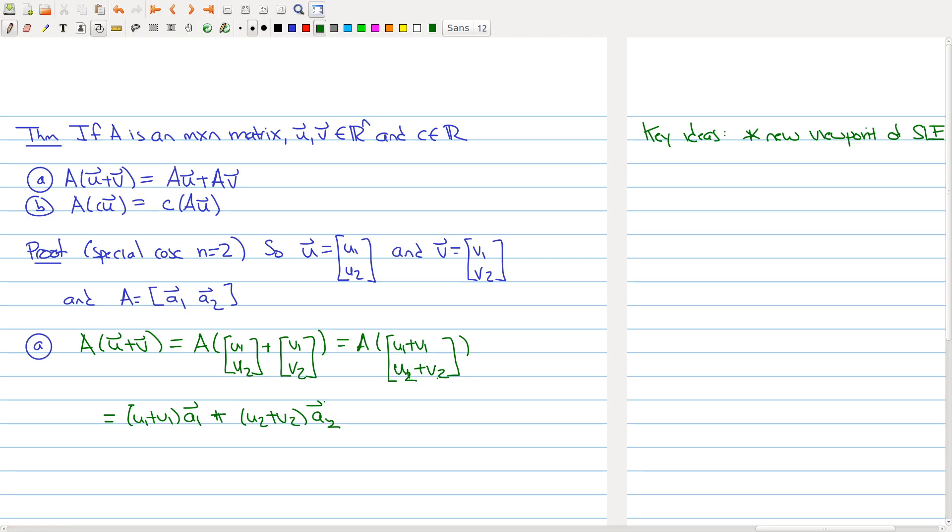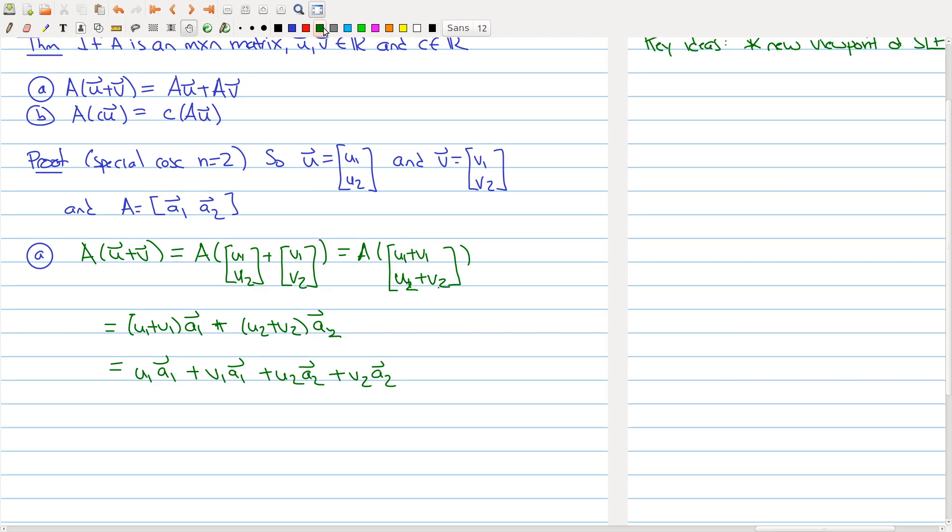And now let's expand out and then recollect. So if I expand this out, I get u1 times the first column, plus v1 times the first column, plus u2 times the second column, plus v2 times the second column. Because here I'm just using the properties of vector addition and scalar multiplication. Move up my page a little bit so I have a bit more room. So now I'm going to recollect terms. Here I have u1, a1, but I'm going to collect them differently. I'm going to put all the u's together, and I'm going to put all the v's together.